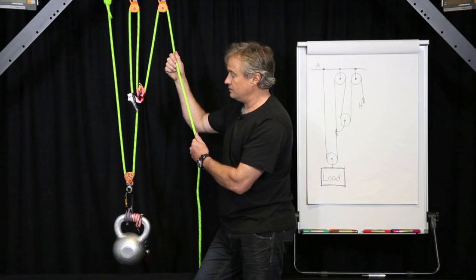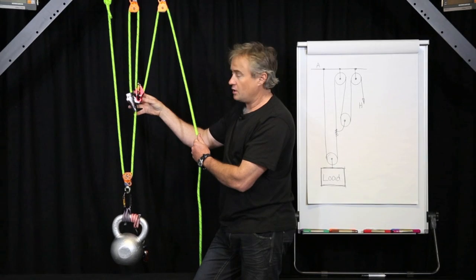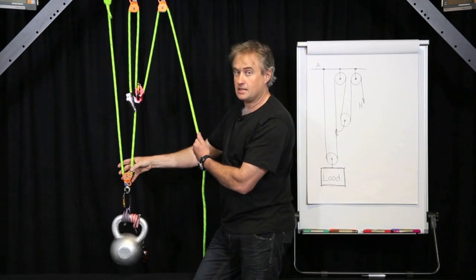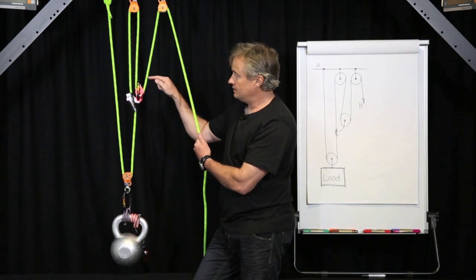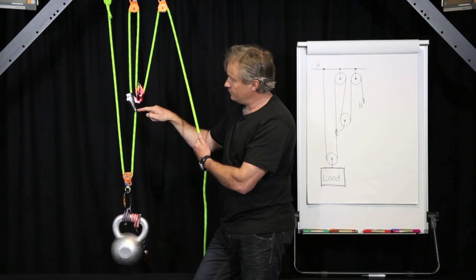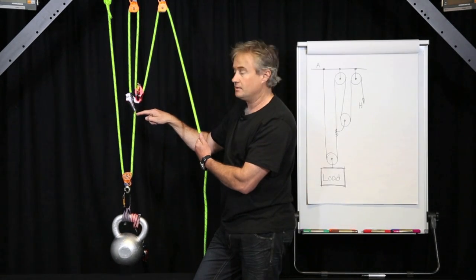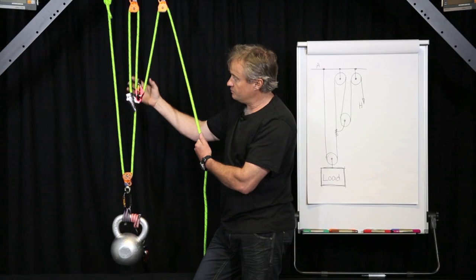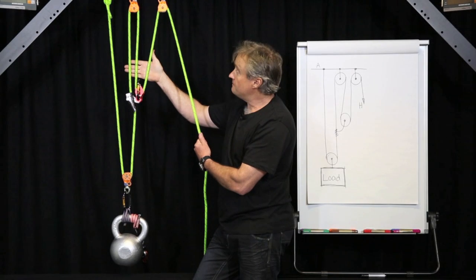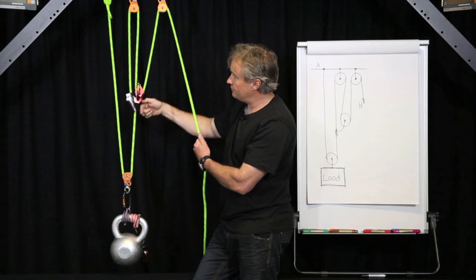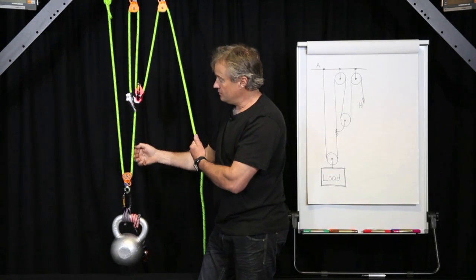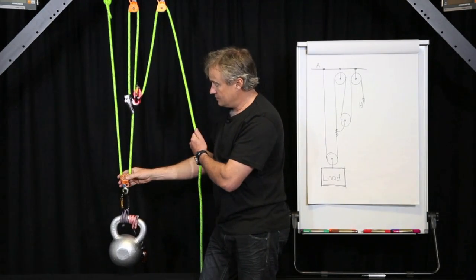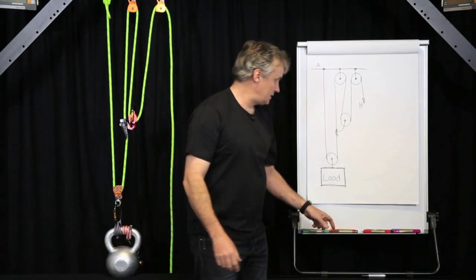Let's try and identify those two components. The terminology we use for each simple component is a throw. This first component becomes the first throw of our system, and the second component is our second throw. For our first throw, we're going to say that this point here is our load. We count the number of strands that directly support our travelling pulley and our load, which would be three. We've also got this change of direction pulley up here, so this first throw would be called a 3-to-1 CD. The second throw has two strands that directly support the travelling pulley, which in turn supports the load, so that would be a 2-to-1. So we have a 3-to-1 CD pulling on a 2-to-1.